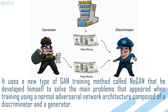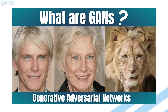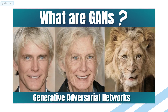It uses a new type of GAN training method called NoGAN that he developed himself to solve the main problems that appeared when training using a normal adversarial network architecture composed of a discriminator and a generator. GAN training works by training the discriminator and generator at the same time, where the generator starts by being completely random and improves over time to fool the discriminator, which tries to tell if the image is generated or real. If this is abstract to you, I invite you to watch the video I made about GANs, linked in the upper right corner and in the description.